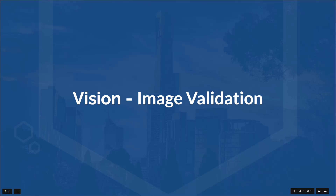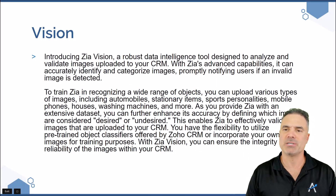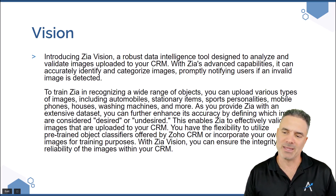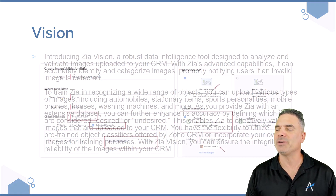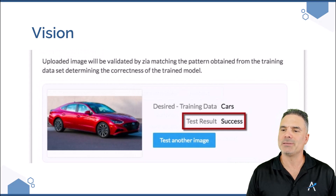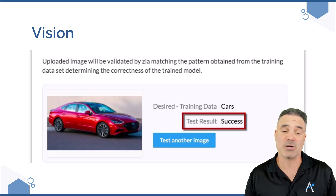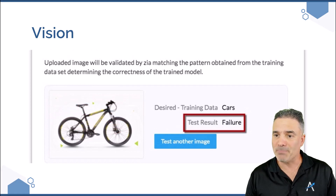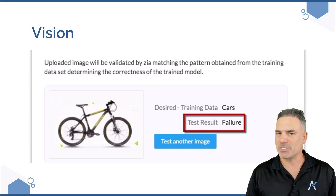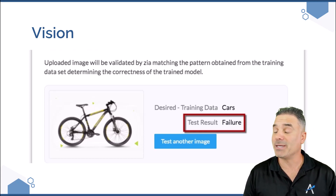Next we are jumping to vision, which is image validation. There will be some cases where you need to upload pictures into the CRM. In this case, the CRM can learn what the picture you are trying to upload means, and based on that it will tell you if the picture you uploaded is the correct one or not. As an example, if I define a car — whenever I upload a car picture, the system will tell me this is the correct one. Whenever I upload a bicycle, it will tell me what I'm uploading is not the correct picture. That can be used for acquisition forms, for X-rays, and many other things. Experiment with it — it's awesome.